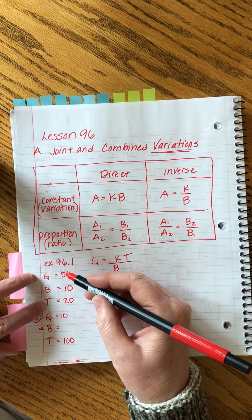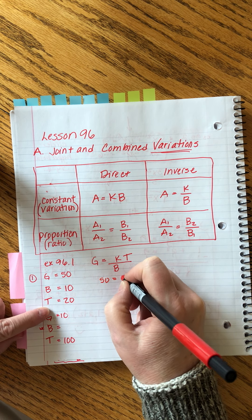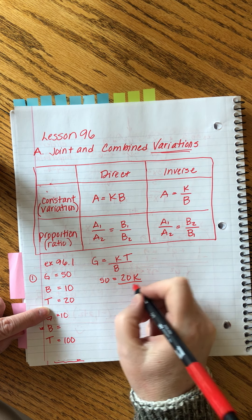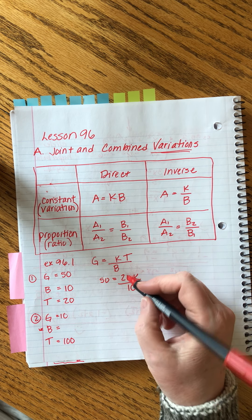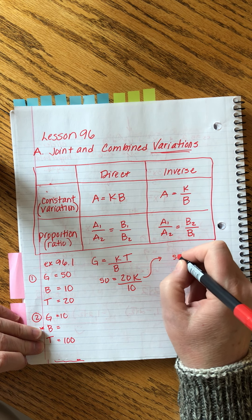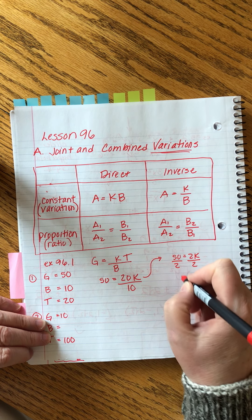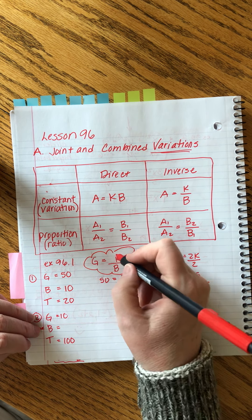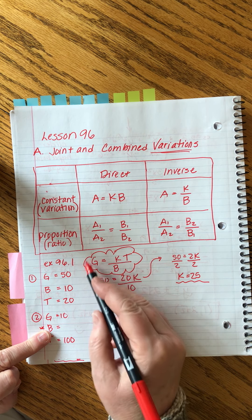There will be a scenario one where we find out about girls, boys, and teachers to calculate k, and a scenario two where we get two of the three and solve for the last one. Read the words just enough to figure out what's going on, set up your formulas, then go back to the numbers. When there were 50 girls, there were 20 teachers and 10 boys.